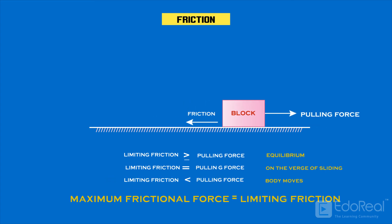The block starts to move only when the applied force crosses the maximum limit of the frictional force. The frictional force adjusts itself and becomes equal to the applied force, so that it is just sufficient to stop the motion, till the applied force reaches limiting friction.